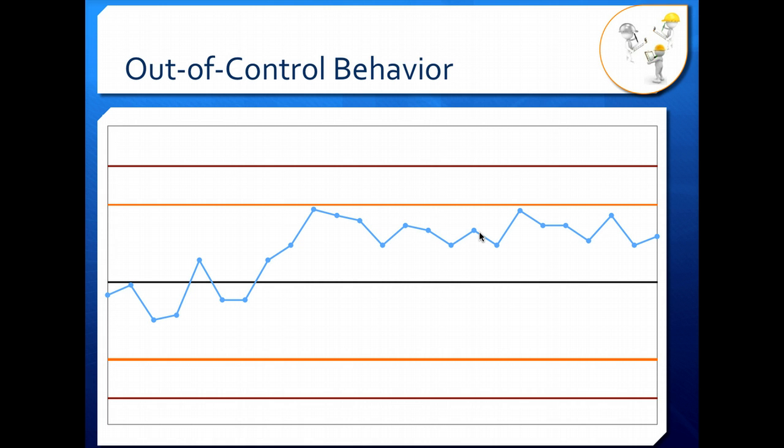This is a change or jump in level. You can see the jump right here. Your process goes from the average being the black line to the average being something higher than that. We're not outside the even the warning limits yet, but this is an out-of-control behavior.